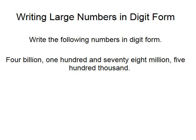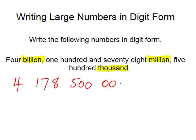Moving on to the next slide, the number we have to put in digit form is 4,178,500,000. Our cue words are billion, million, and thousand. So it is 4,178,500,000. We need to state the obvious, which is that there are zero hundreds, zero tens, and zero units.